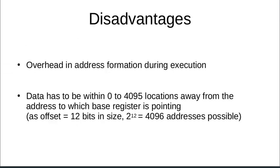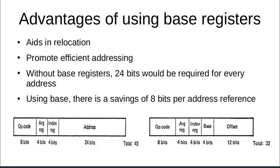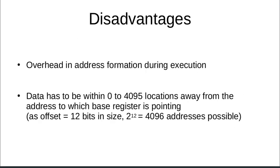There are certain disadvantages too. There is overhead in address formation during execution, as the machine needs to determine the address by computing base, index, and offset. Also, the data must be within a range of 0 to 4095 locations from the address the base is pointing to, because the offset is 12 bits and 2 to the power 12 gives 4096 possible addresses. If a program requires address locations beyond 4096, this addressing mode is at a complete disadvantage.